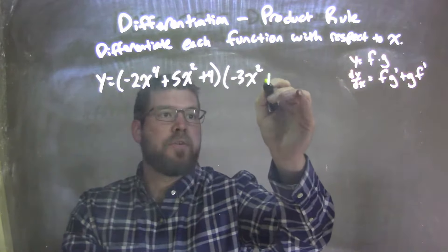The first one, negative 2x to the 4th plus 5x squared plus 4, I'm going to label that as my f. And negative 3x squared plus 2, I'm labeling that as g.